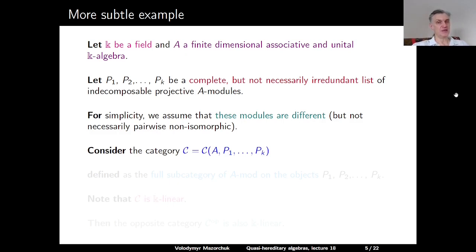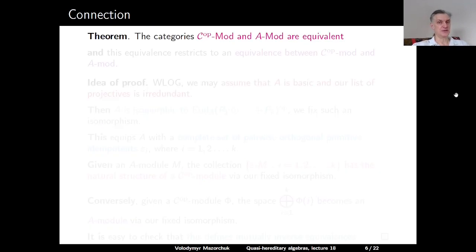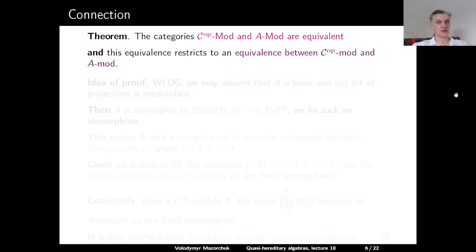We consider the category C, which depends on A and our choice of P_1, P_2, ..., P_k, defined as the full subcategory of A-mod with objects P_1, P_2, ..., P_k. Since it is a full subcategory of A-mod, which is k-linear, our category C is also k-linear, and the opposite category C^op is also k-linear. Theorem: The category of all A-modules is equivalent to the category of all C^op-modules, and this equivalence restricts to an equivalence between the corresponding categories of finitely generated modules.